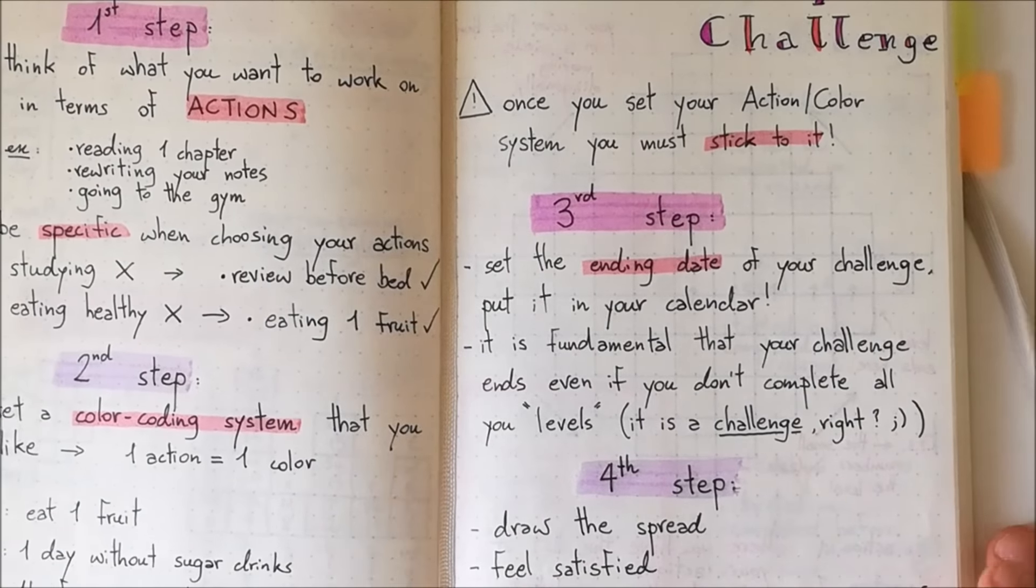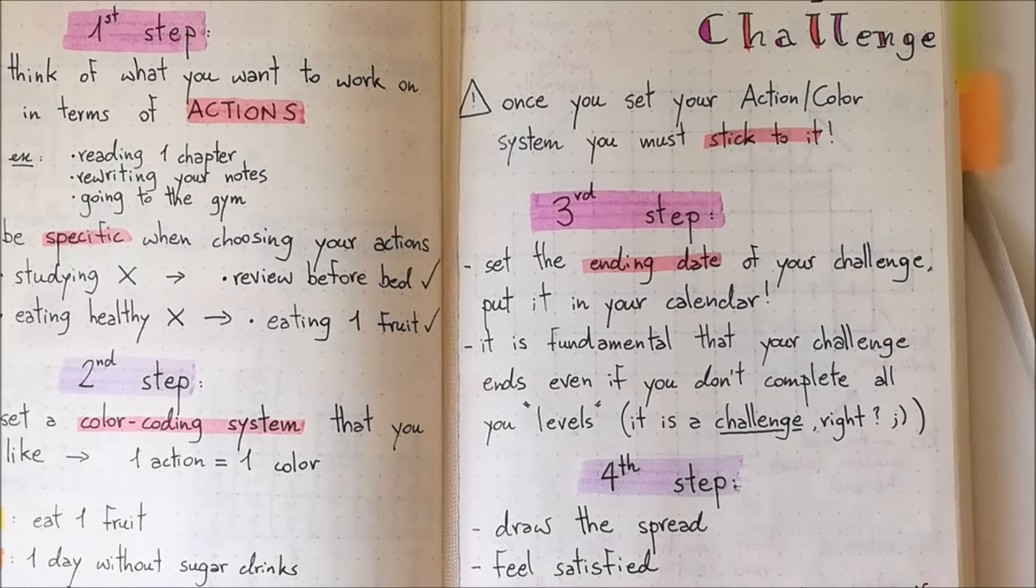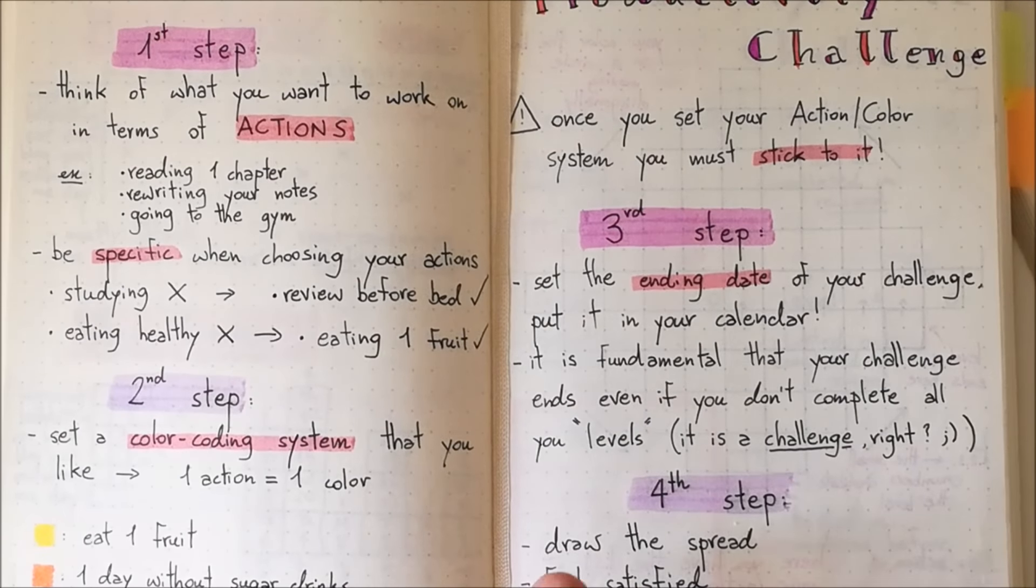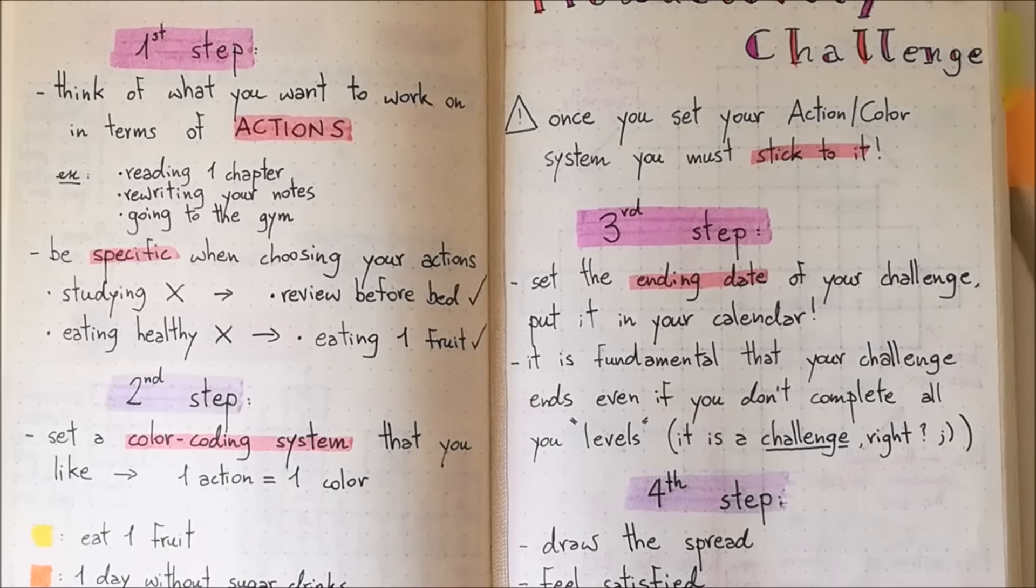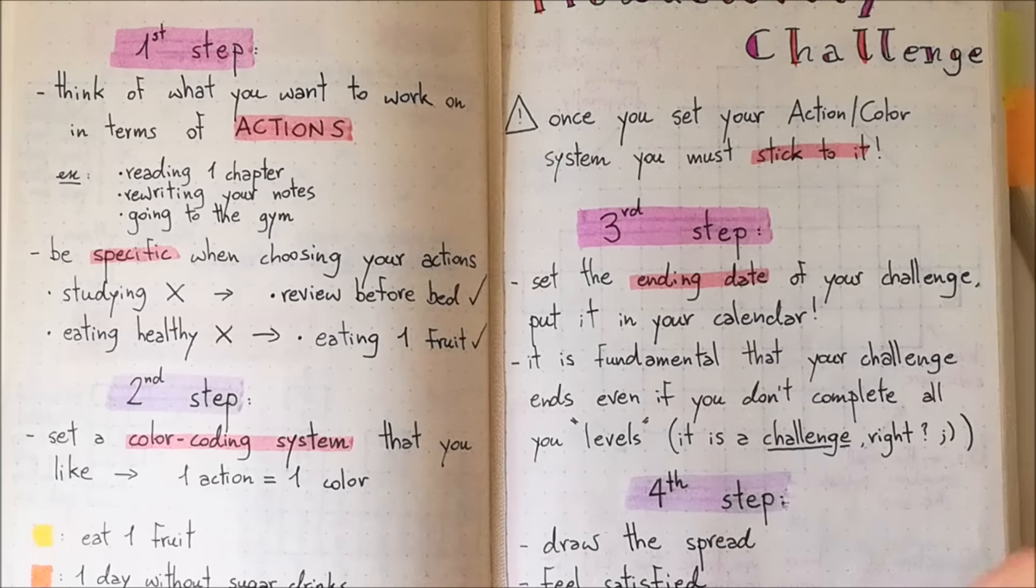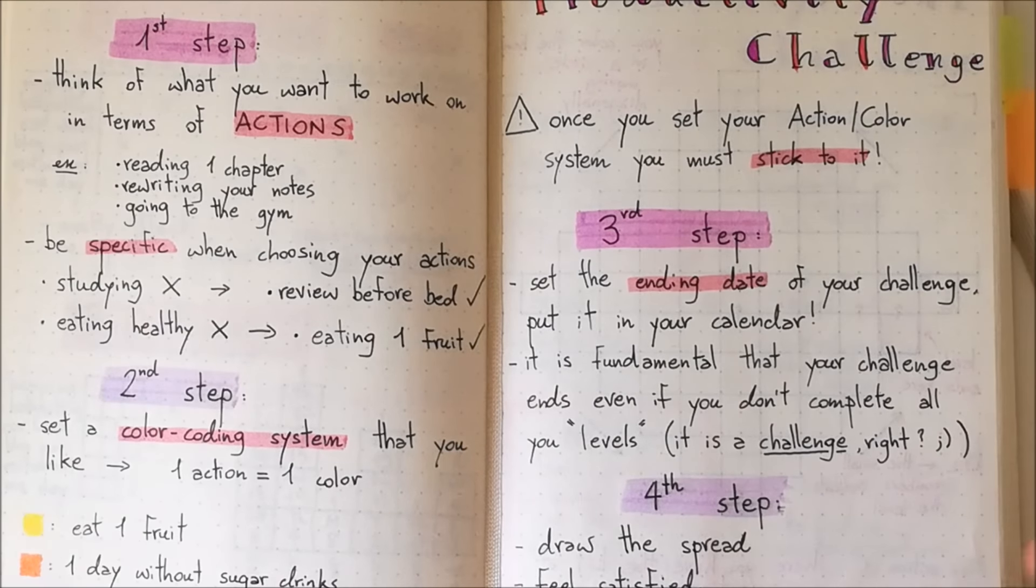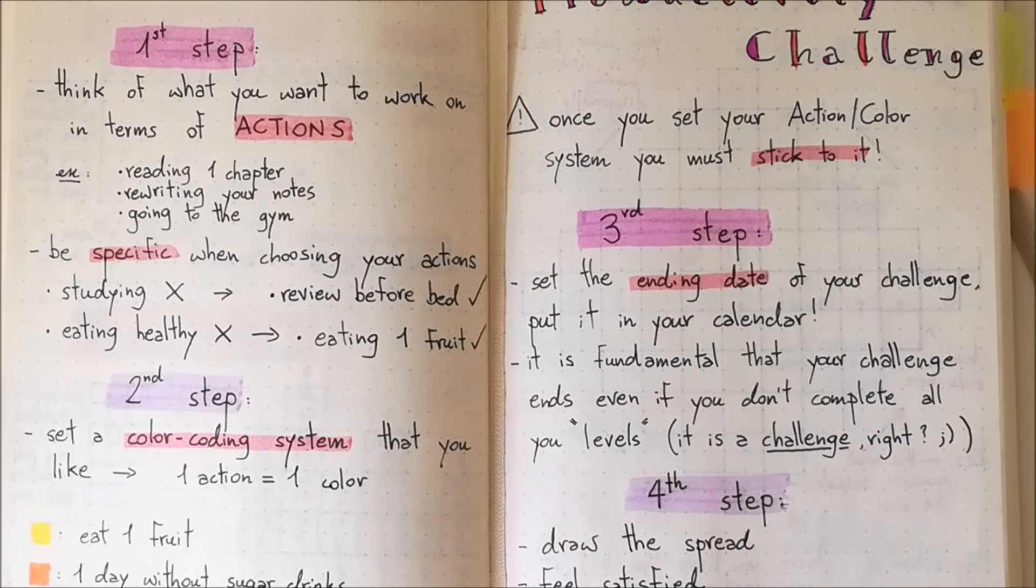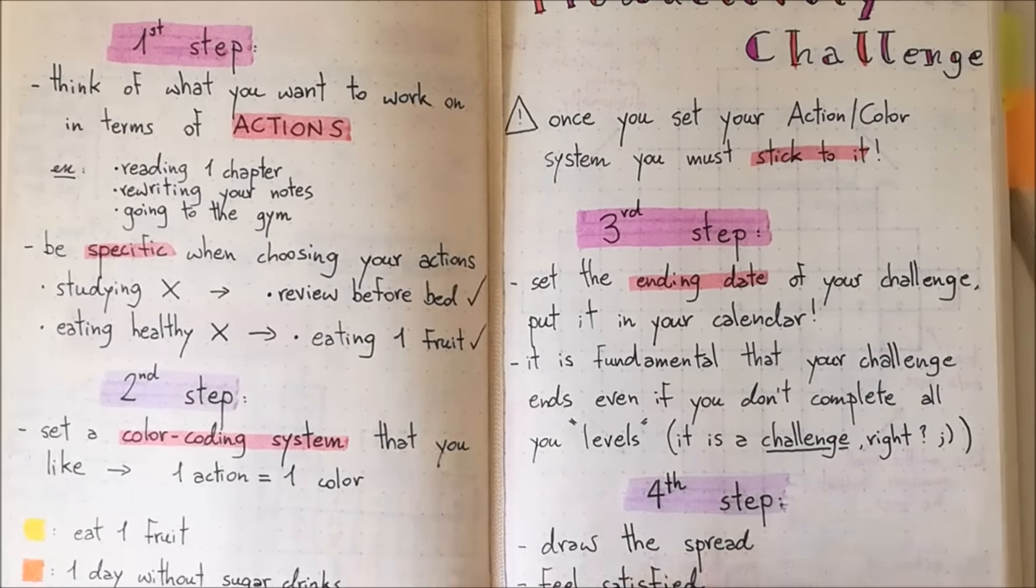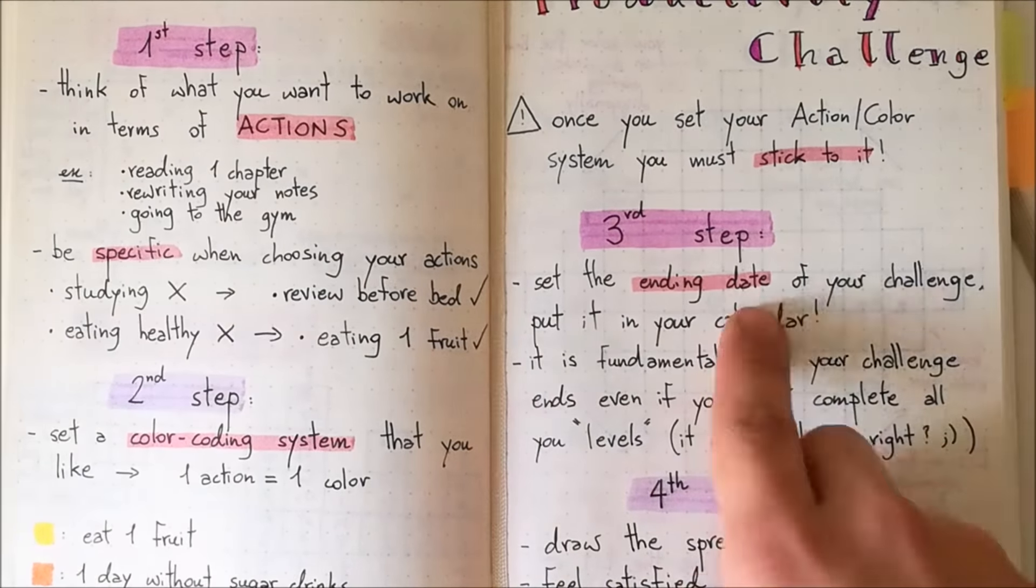Third step is to set the ending date of your challenge and to put it in your calendar. It is very important to know ahead of time when your challenge is going to end. Otherwise, it won't be challenging at all. For my current productivity challenge, I have decided to set my ending date for the 1st of March. So I am committing myself to color the whole spread in before that day. So it could be one month, it could be two months, it could be three months, but it is important that you set the ending date and that you stick to it, that you put it in your calendar. So this way, even if you don't complete the challenge, you'll know how far you went and when the ending date arrives, then you can start a new productivity challenge. You can focus on what worked and what didn't work, but it is important to have this date in mind.